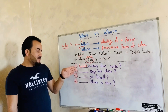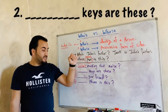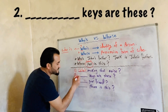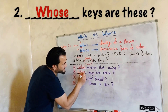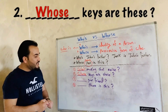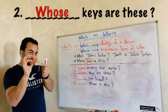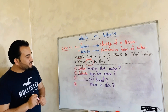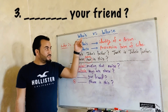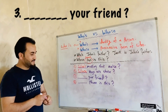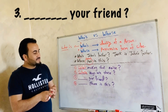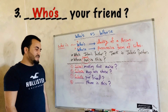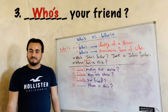The second question: blank keys are these — who is, possessive form of who, so 'whose keys are these.' The third question: blank your friend — whose, meaning who is your friend. Who is your friend? John is my friend.